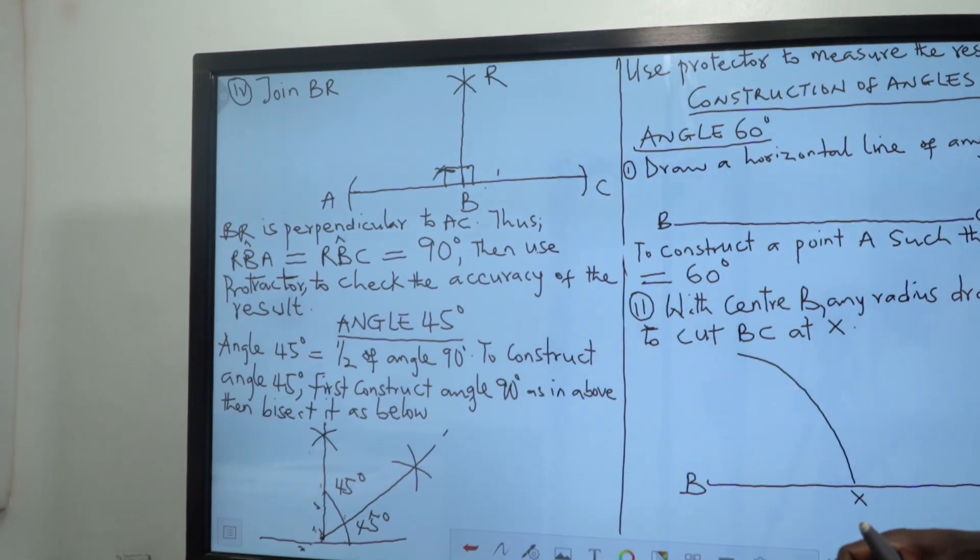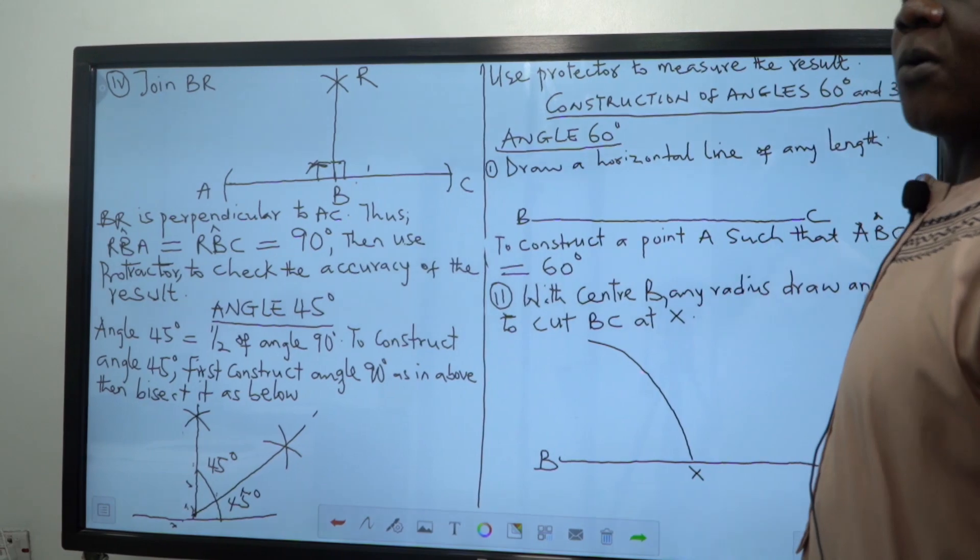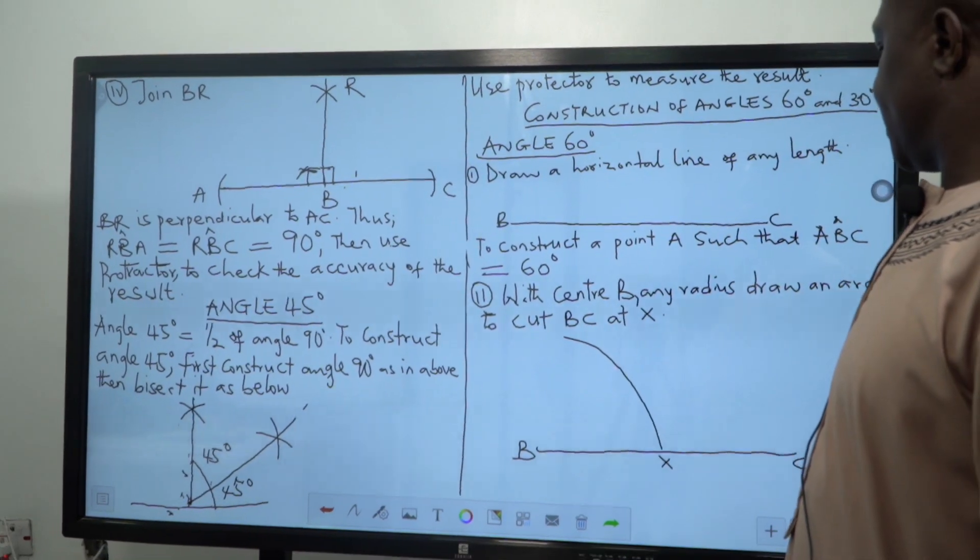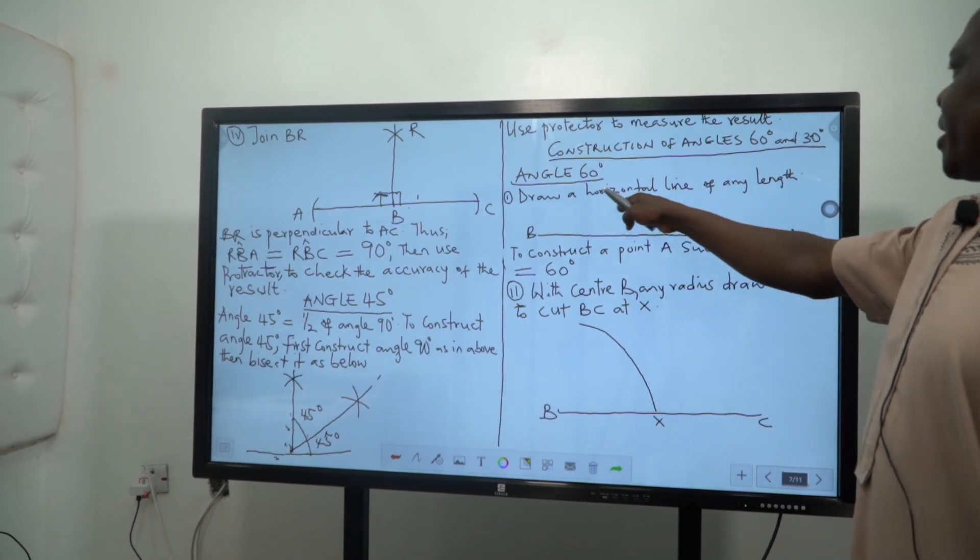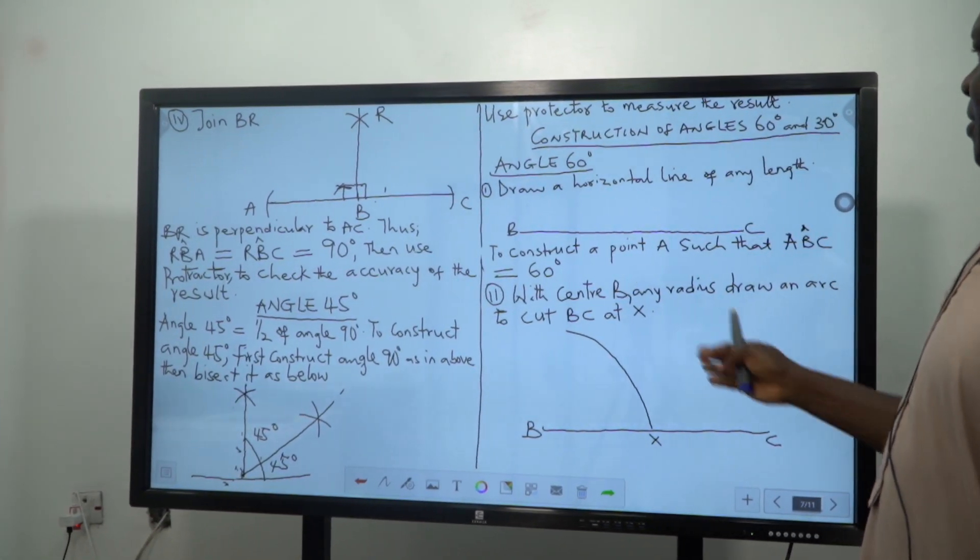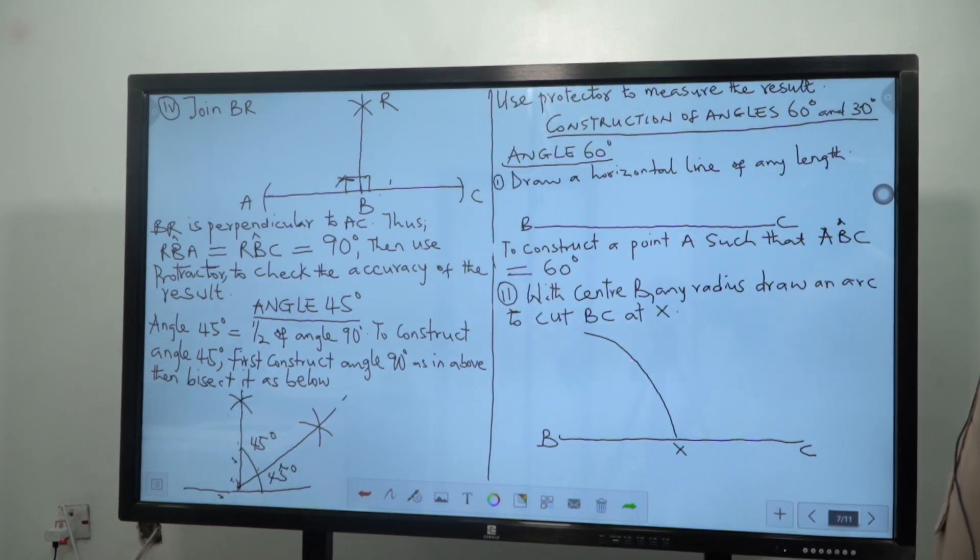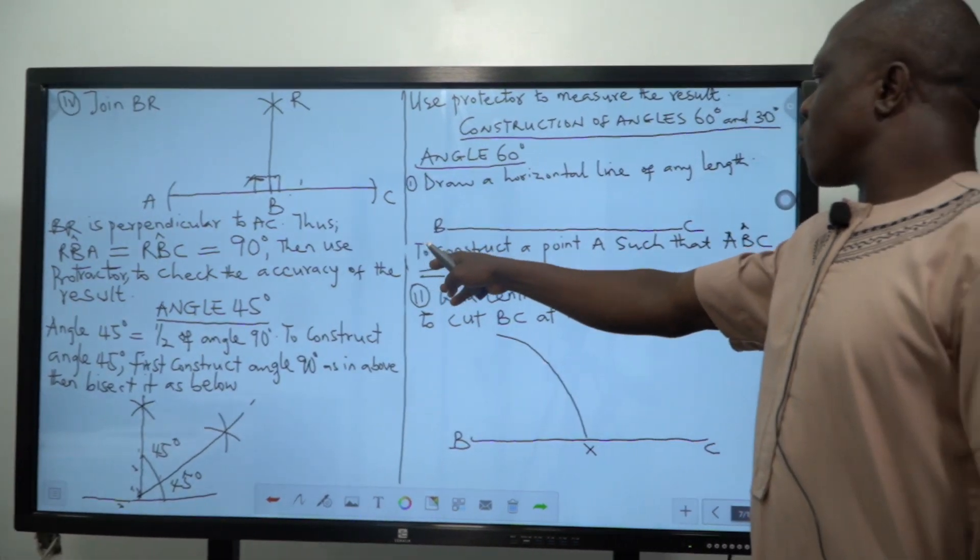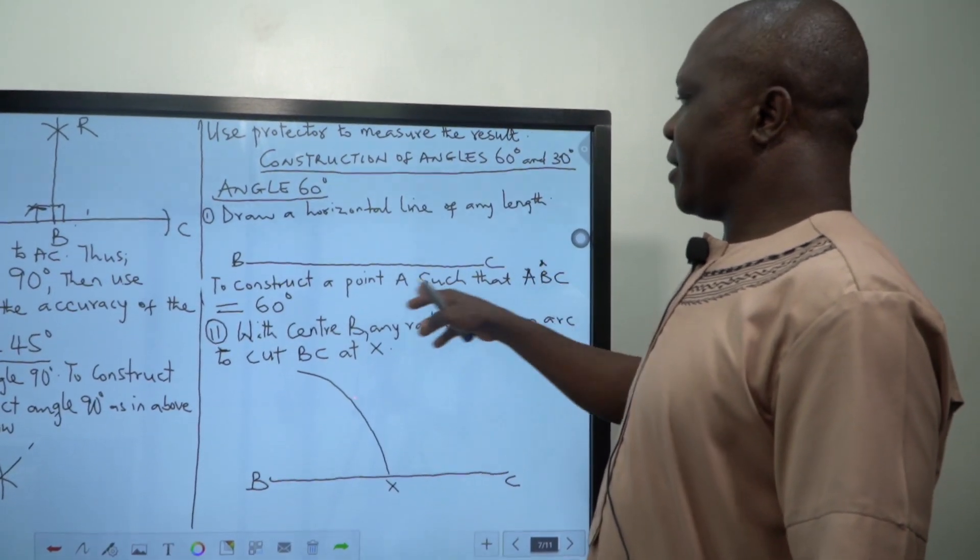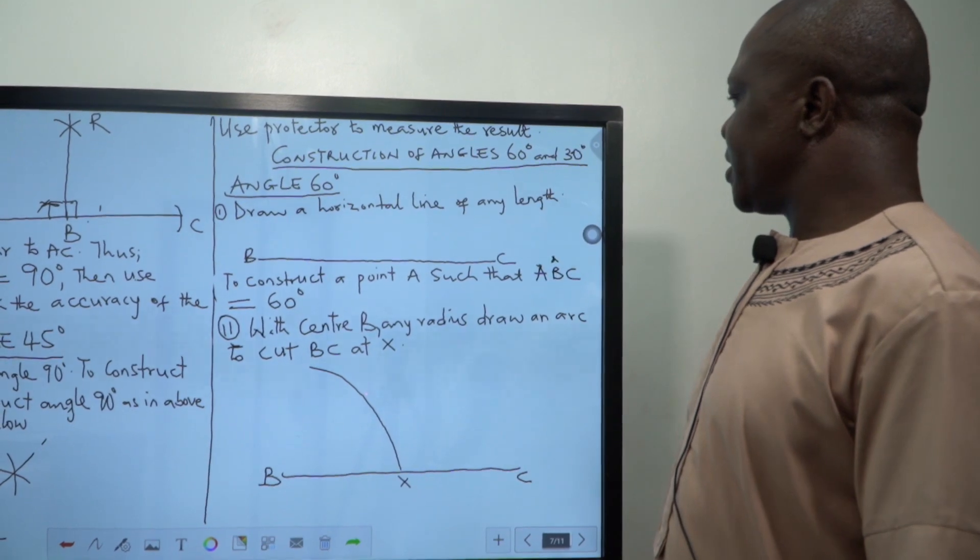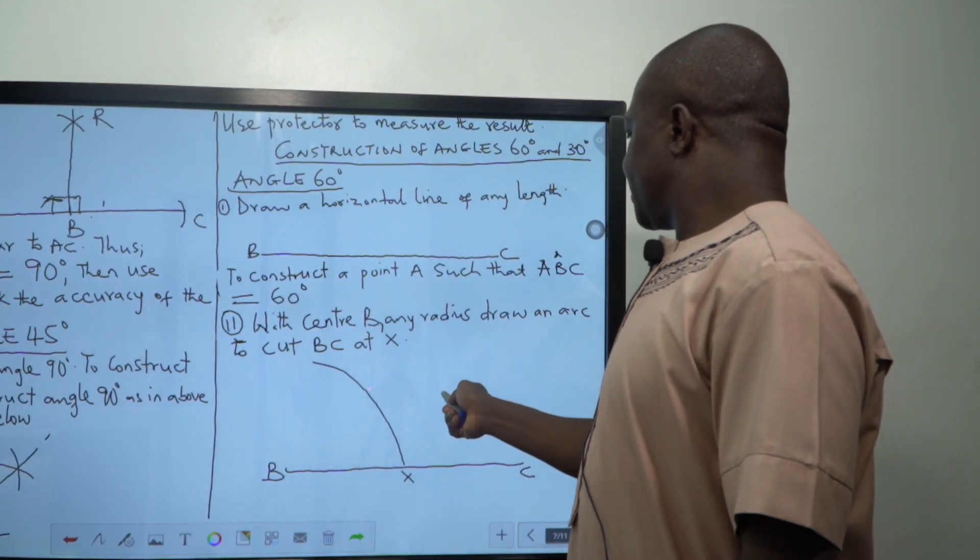Then angle 60. If you want to construct angle 60, I say draw a horizontal line of any length. You can see the horizontal line. Then we want to construct a point A such that angle B is equal to 60 degrees. What do we do? We will make this is the straight line. If you make a point here.